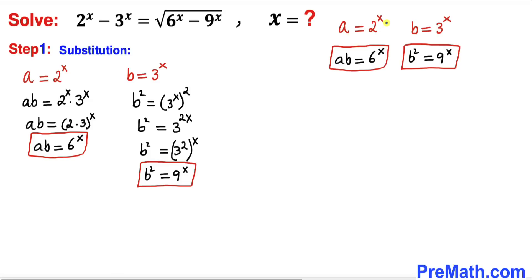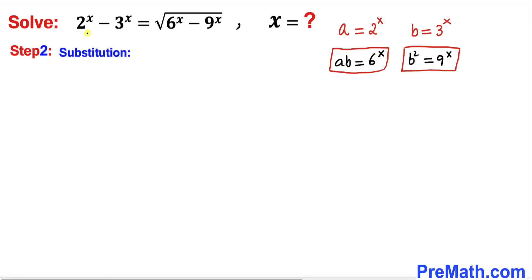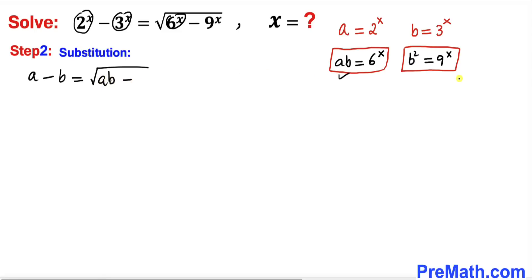So we have a equals 2^x, b equals 3^x, ab equals 6^x, and b squared equals 9^x. Now let's proceed with the substitution: 2^x becomes a, 3^x becomes b, 6^x becomes ab, and 9^x becomes b squared. So we get a minus b equals the square root of ab minus b squared.